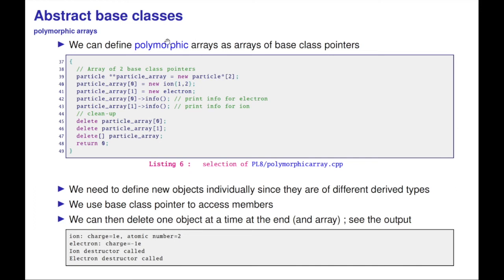You can declare polymorphic arrays as arrays of base class pointers. Here I've just done an array with a double pointer—a pointer to a pointer, which is perfectly legal. Then I can print the information, delete all the stuff, et cetera. We need to define new objects individually since they are different derived types. We use base class pointers to access members. We can then delete one object at a time at the end.